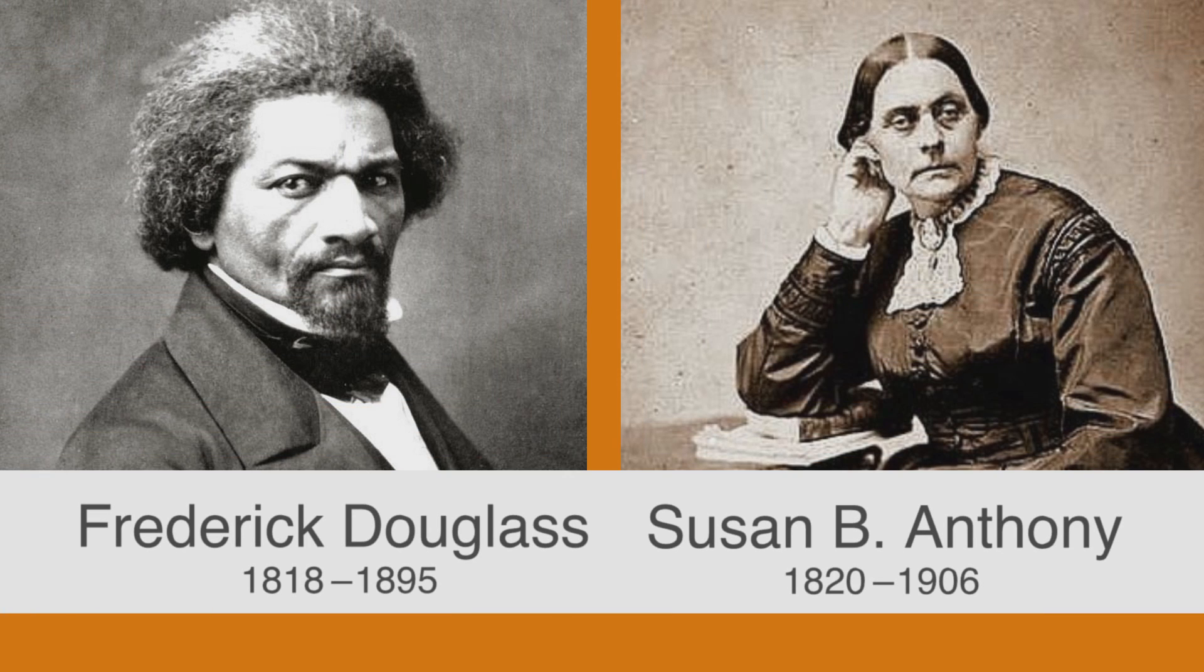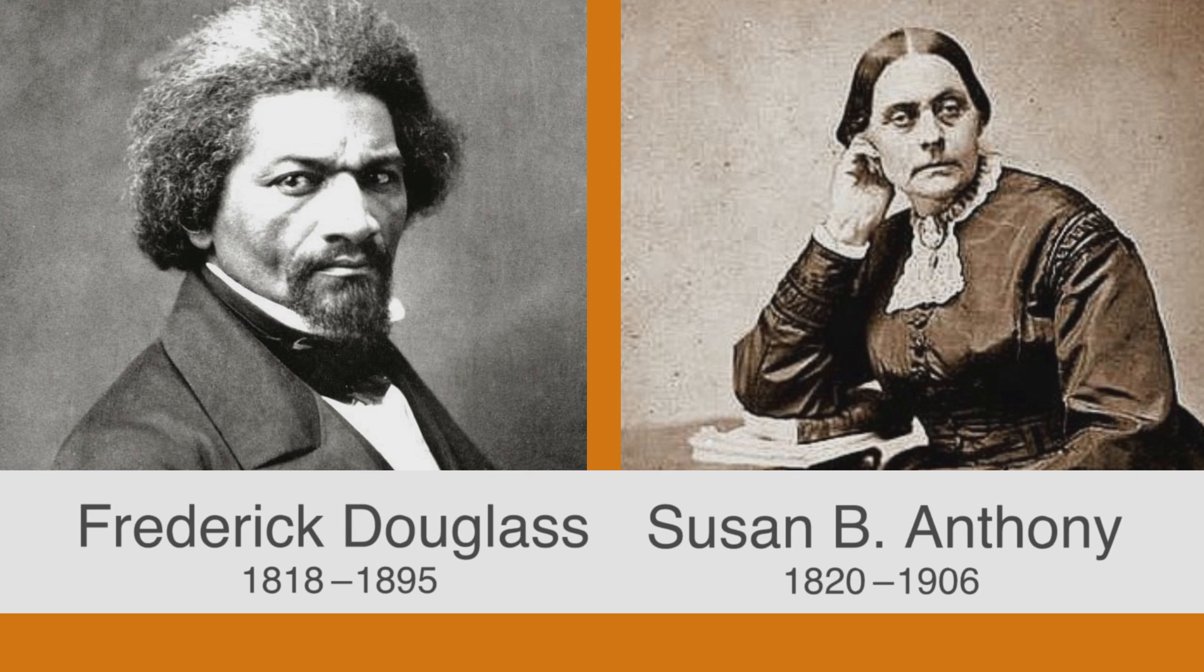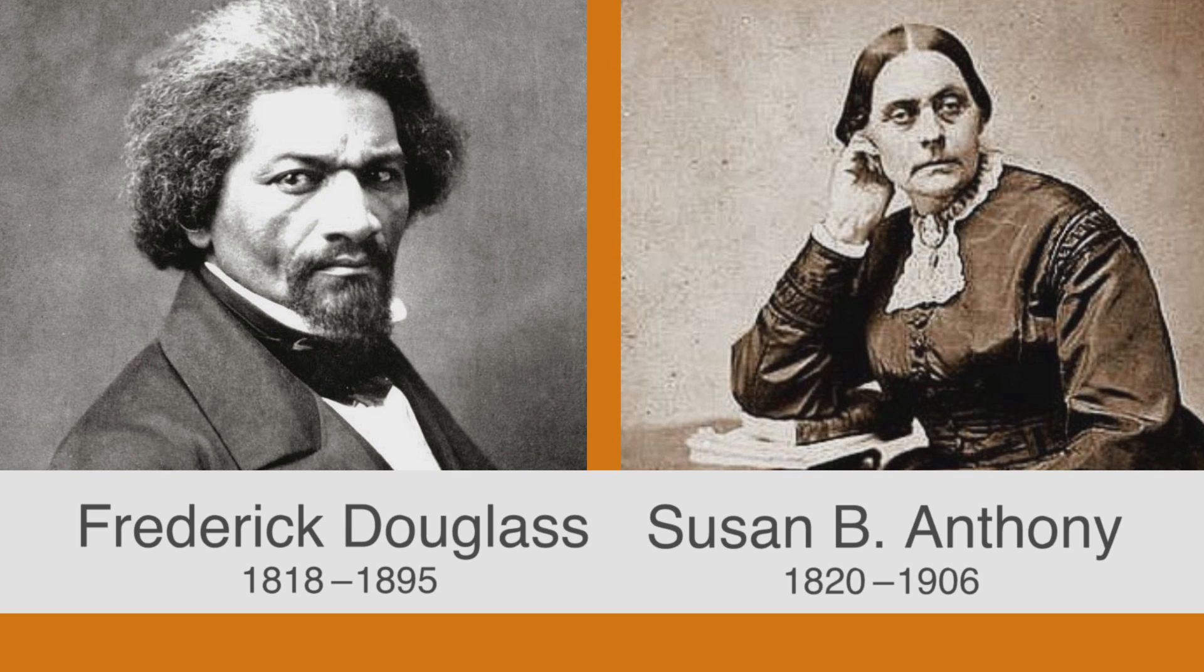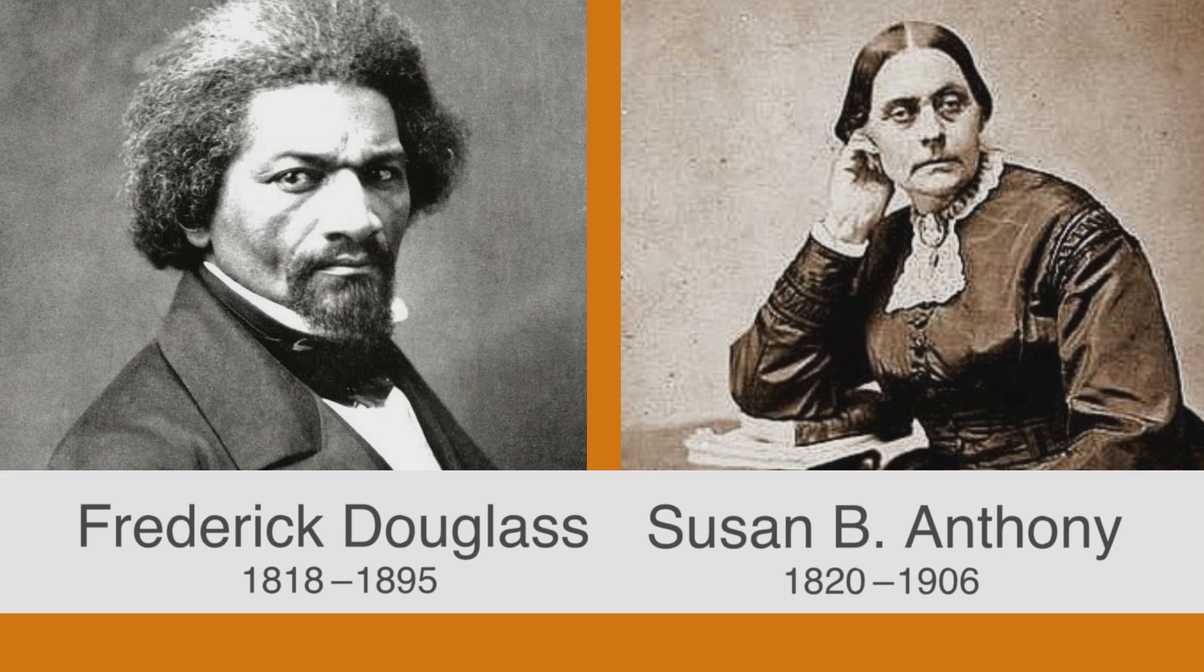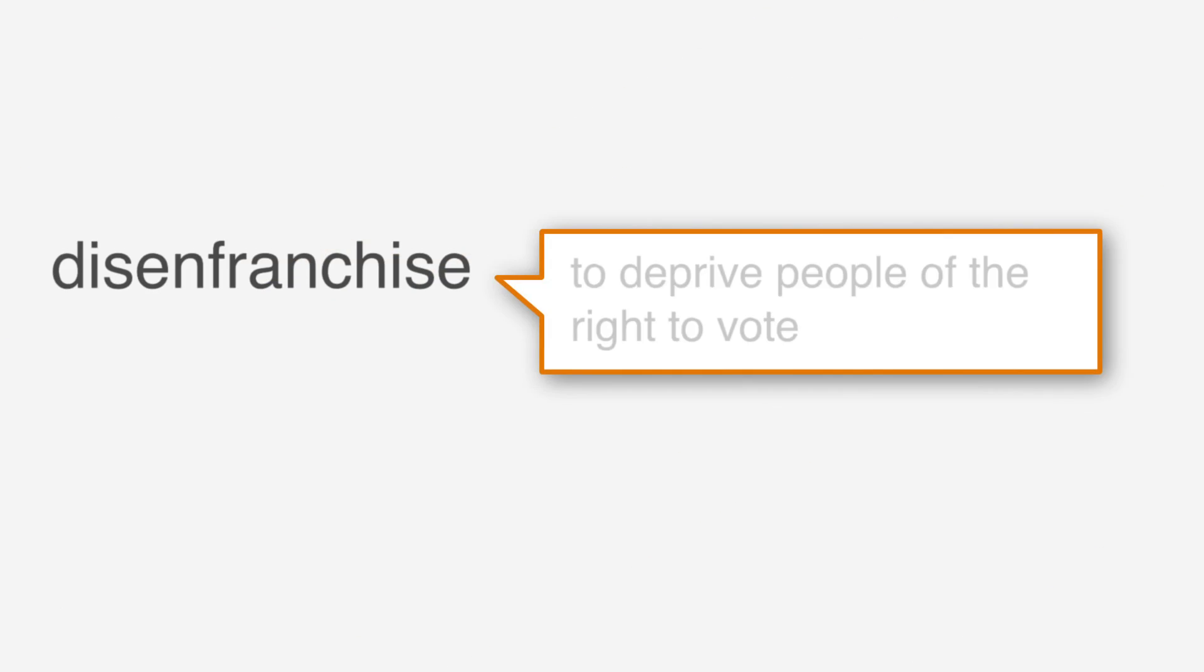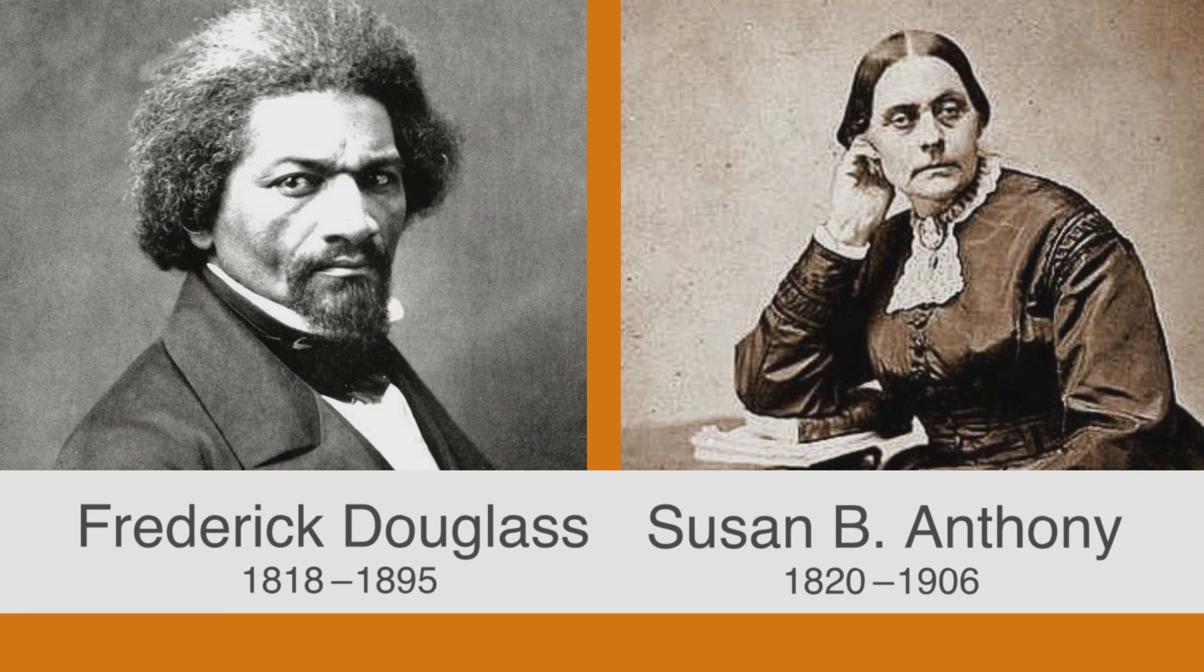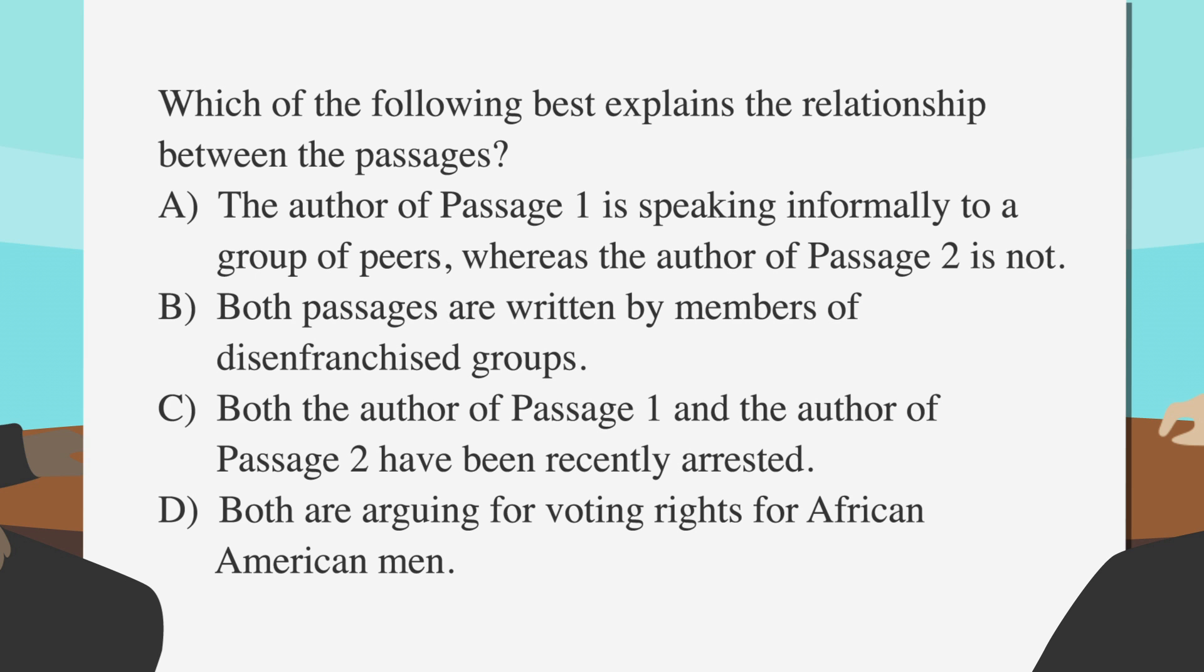So it's stated that the author of passage one, Frederick Douglass, is an African American man and that the author of passage two, Susan B. Anthony, is a woman. Both authors are members of groups whose rights they're fighting for. And since disenfranchise means to deprive people of the right to vote, we can say that both represent disenfranchised groups. Answer choice B says exactly that. Both passages are written by members of disenfranchised groups, so the correct answer is B.